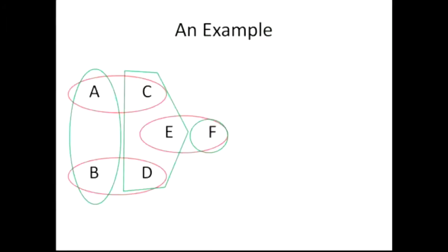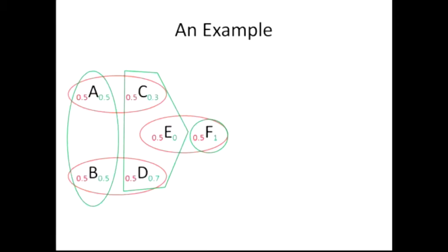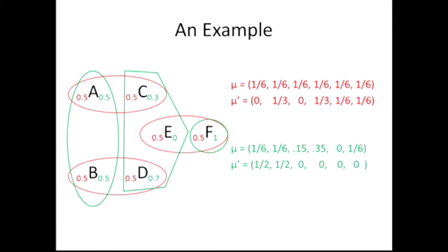There are very strong results if a common prior is the case. Looking at our example, I've placed some posteriors here. The numbers in red are for the red player — if the red player receives the signal that they're in partition A or C, they think A happens with probability one-half and C with probability one-half. If the green player is informed they're in F, they think they're in F with probability one. If the green player receives information they're in partition C, D, or E, they think it's C with probability 30%, D with 70%, and E with zero.